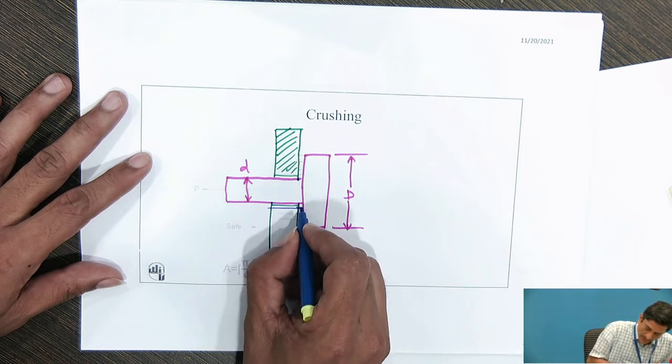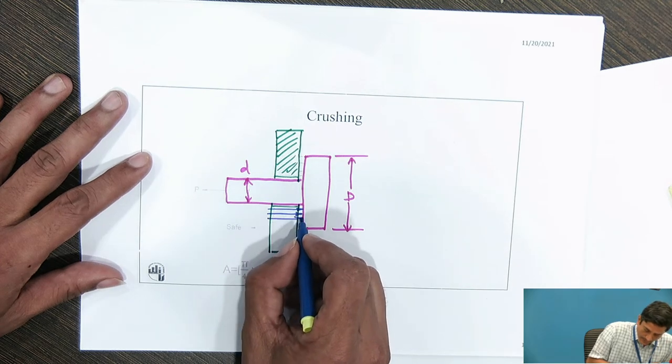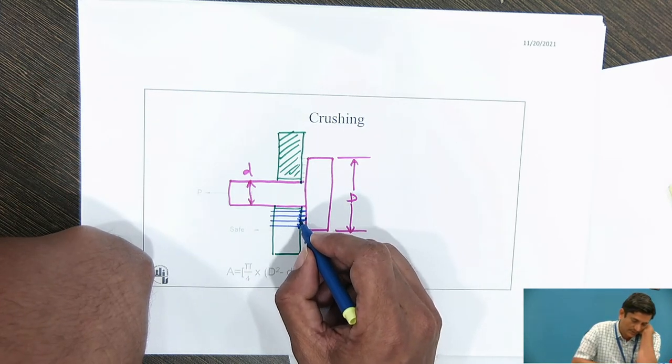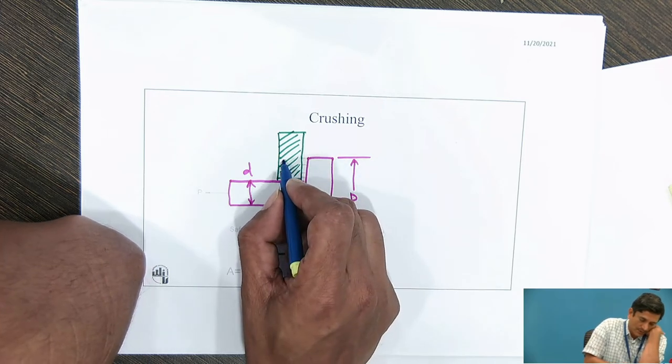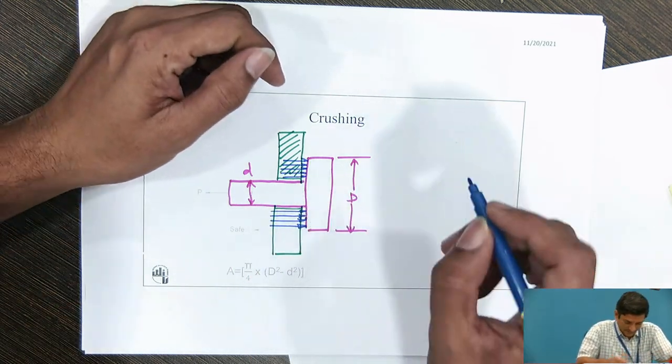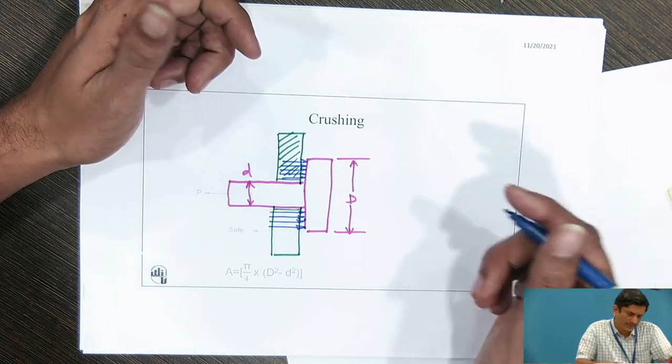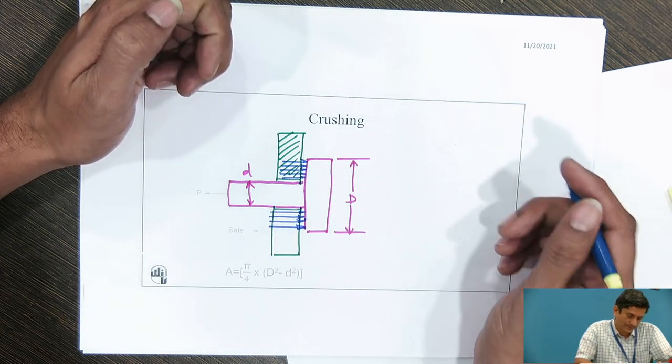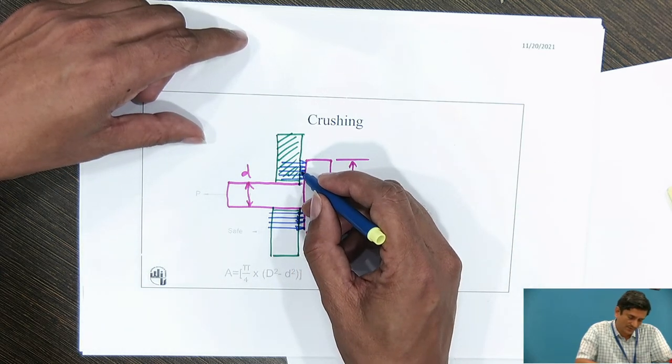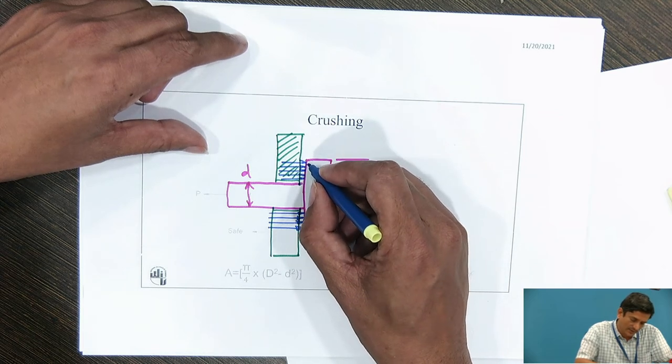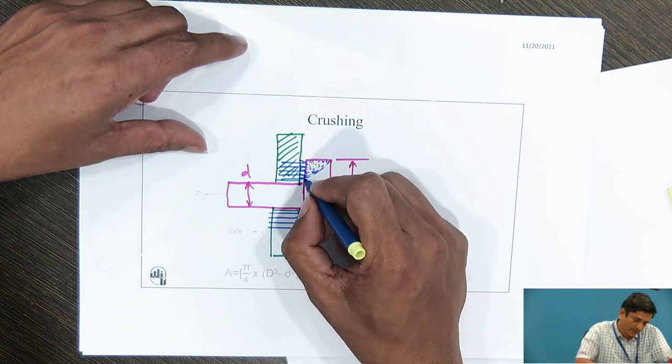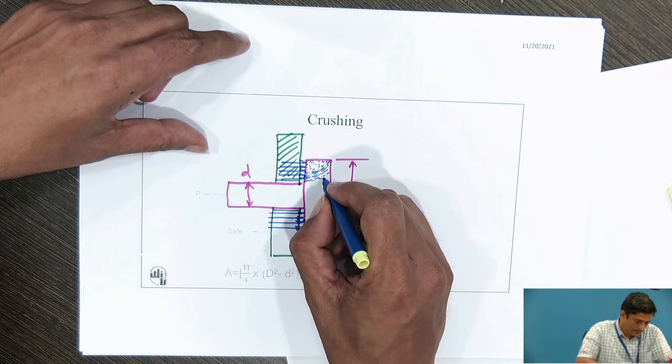What will happen is there will be a compressive force between these two. It is due to the contact stress. The component this part and this part there is compression at this location. I will request you to imagine that I am going to put some sugar cubes over here. If I pull it, the components can get crushed over here.